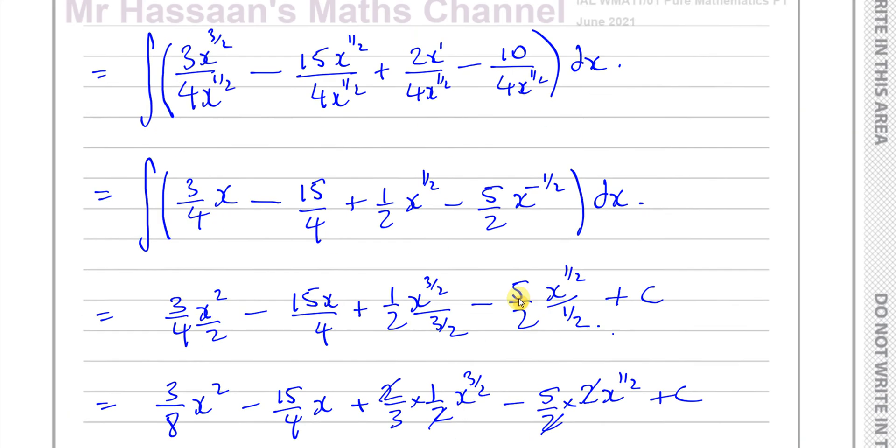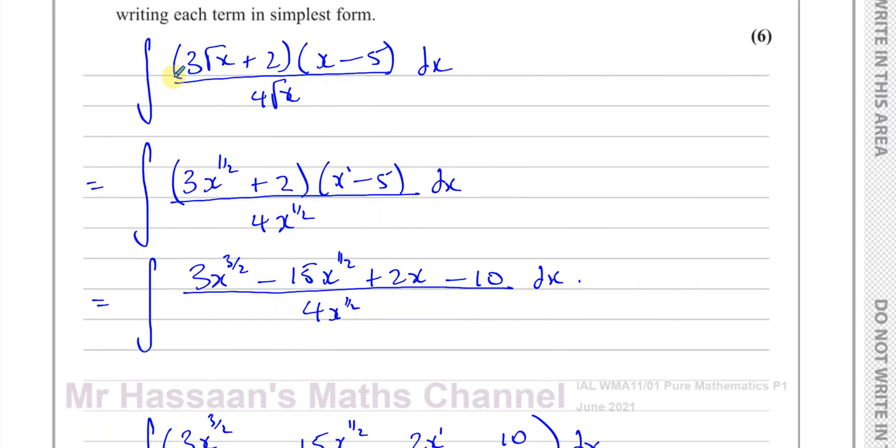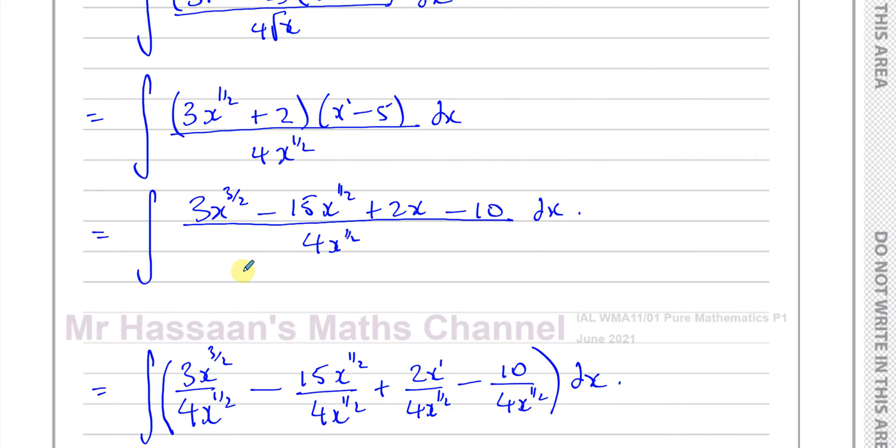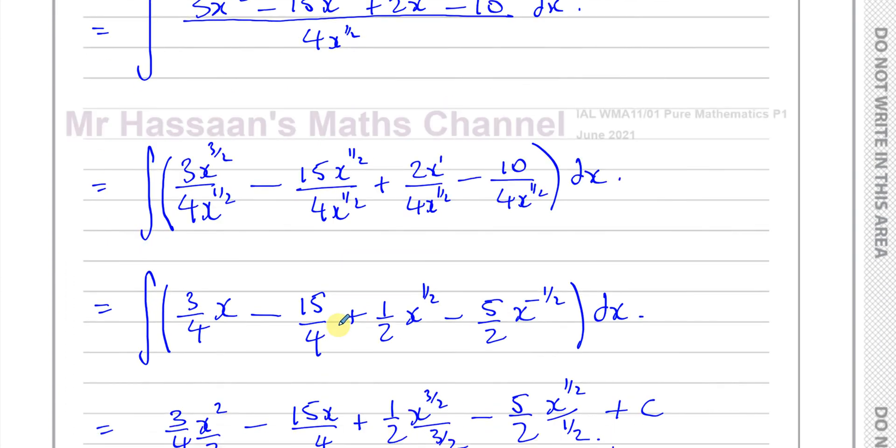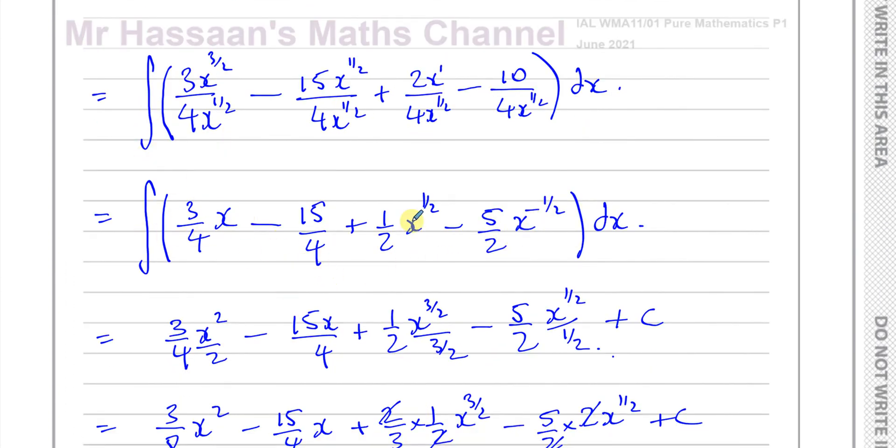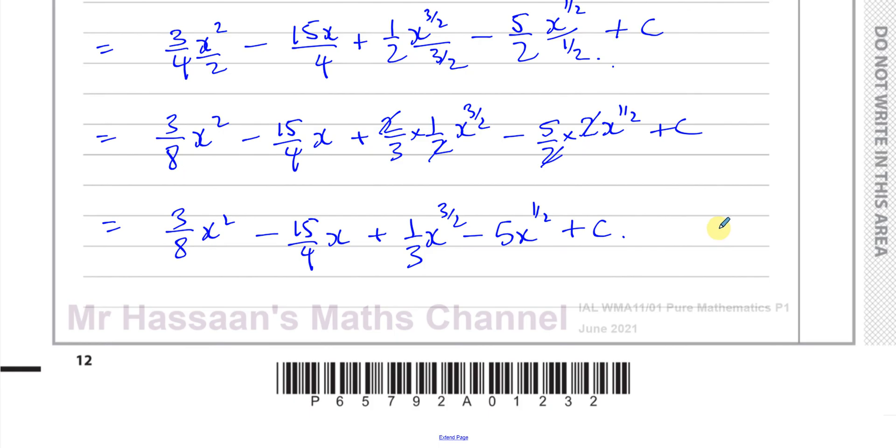And we have completed that question. So important for you to simplify it by expanding the brackets, write them in index form. Then separate each term out separately—this whole thing is under one denominator, separate into separate denominators each term. Get it ready for integration by writing all the x terms on the numerator, then add 1 to the power divided by the new power, and you get your answer.